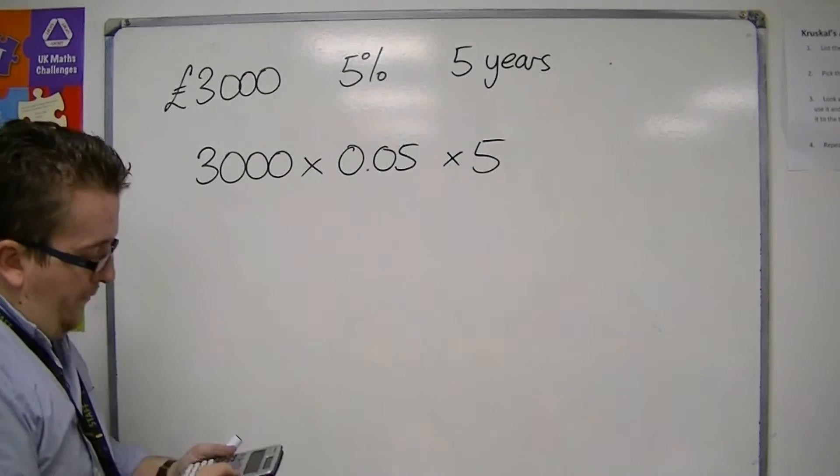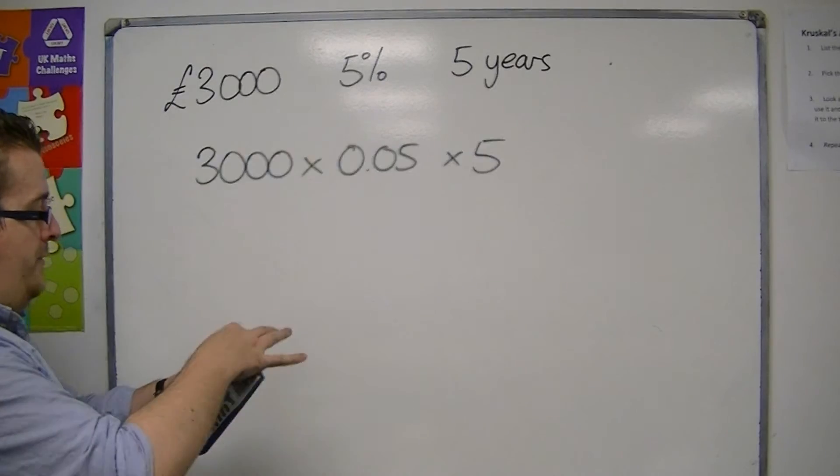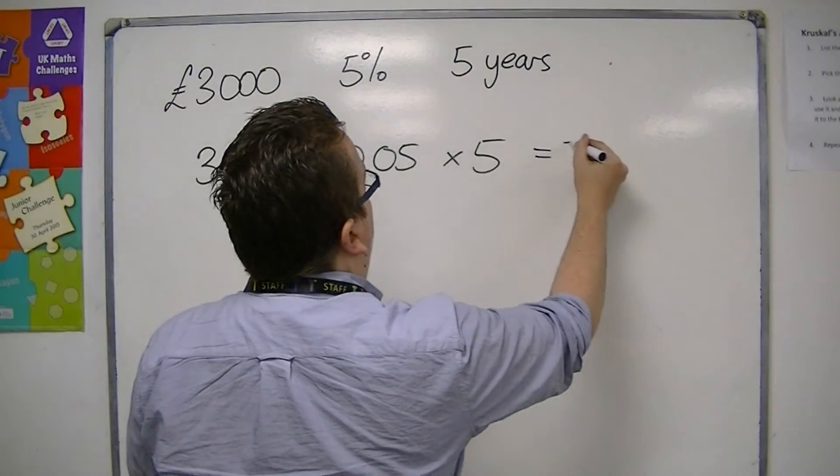So if I then work that out, 3000 times 0.05 times 5, that gets me 750.